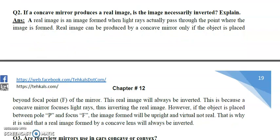Question number two: If a concave mirror produces a real image, is the image necessarily inverted? A real image is the image formed when light rays actually pass through the point where the image is formed. For a concave mirror, a real image is formed only if the object is placed beyond the focal point of the mirror.